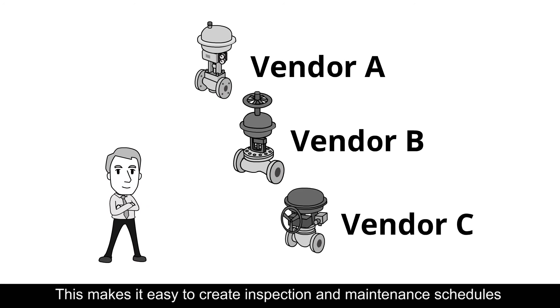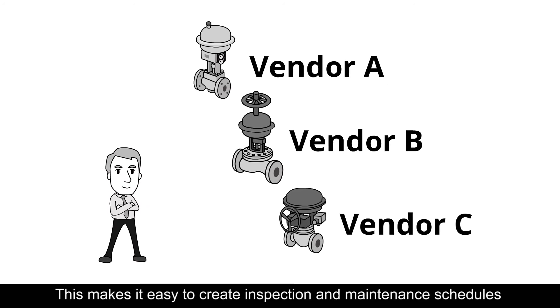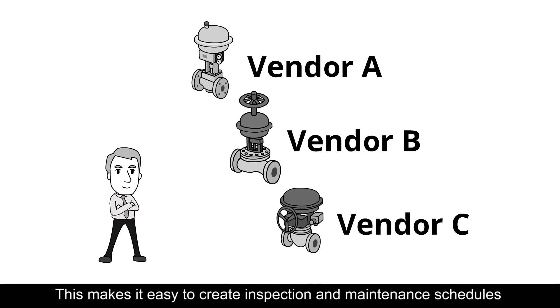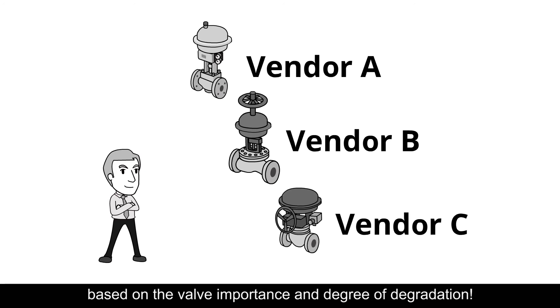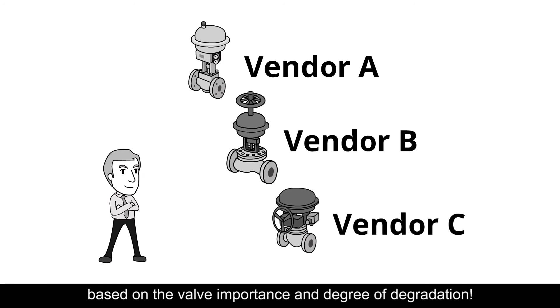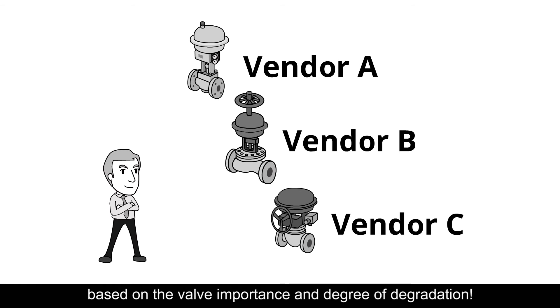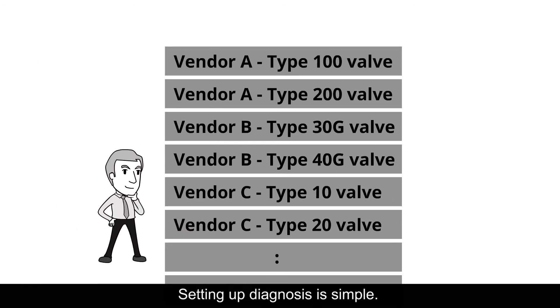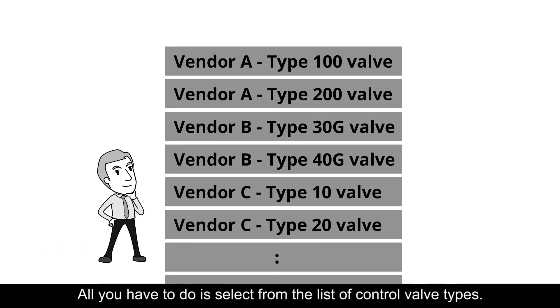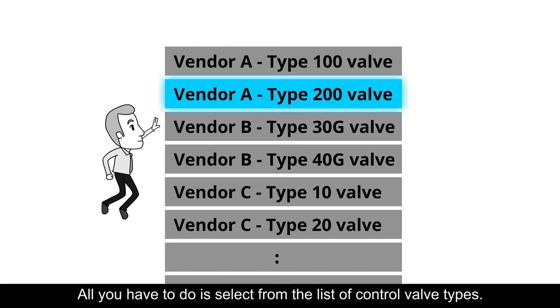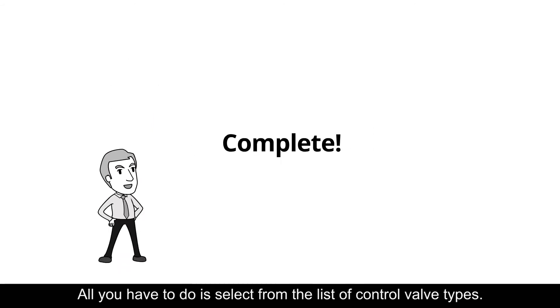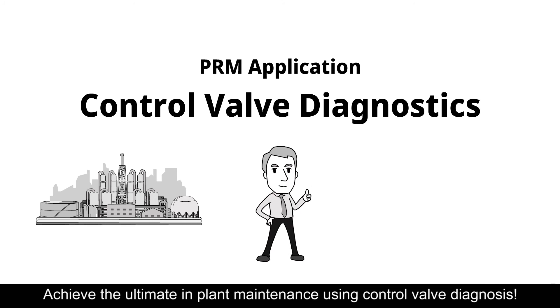This makes it easy to create inspection and maintenance schedules based on the valve importance and degree of degradation. Setting up diagnosis is simple — all you have to do is select from the list of control valve types. Achieve the ultimate in plant maintenance using control valve diagnosis.